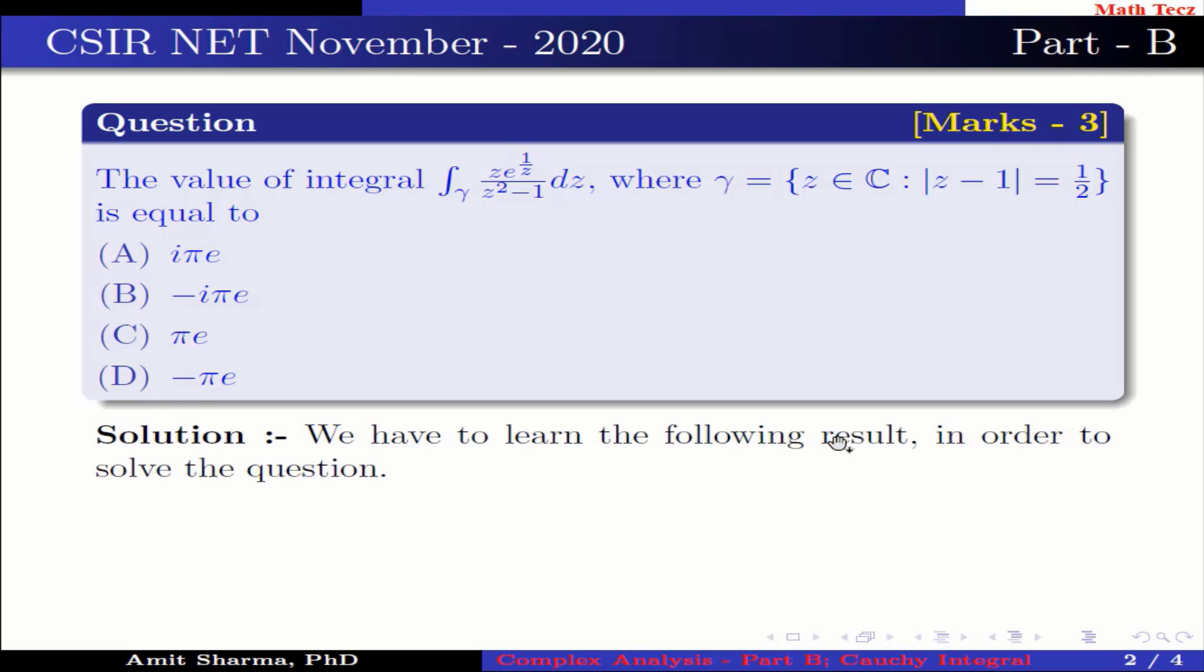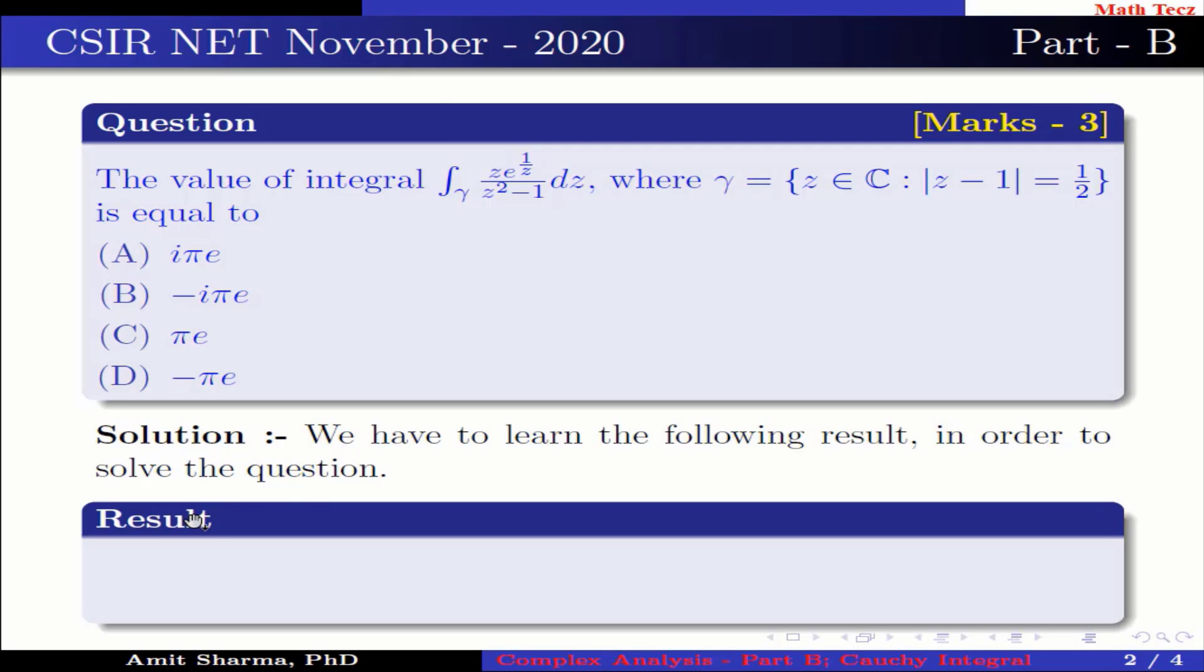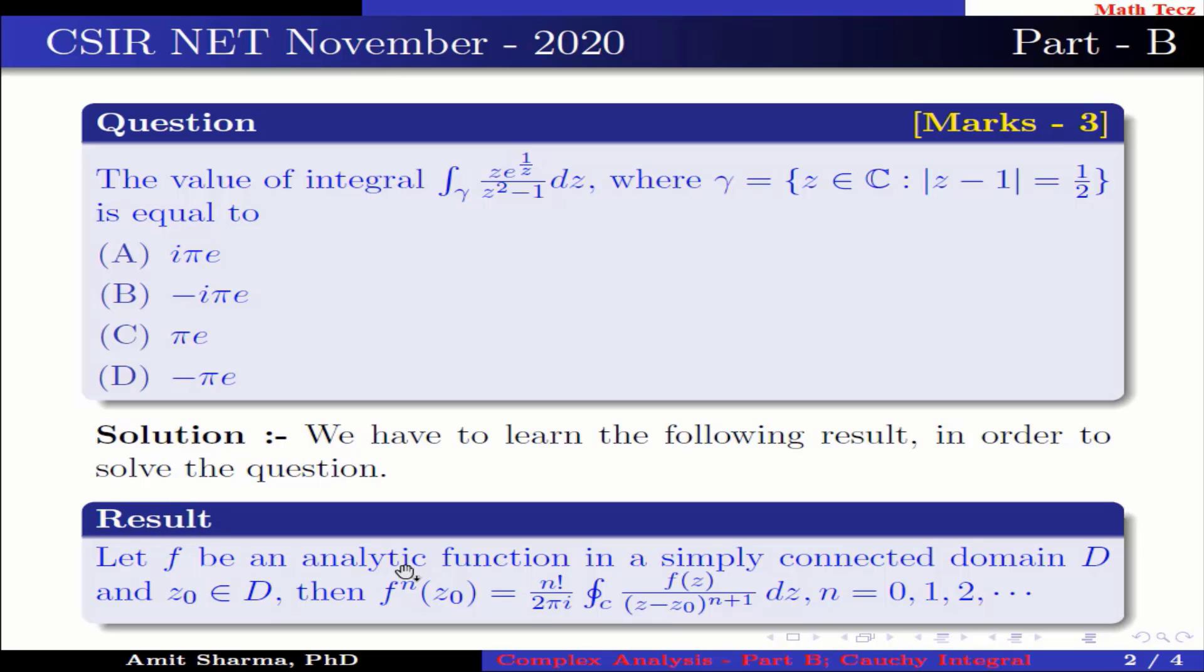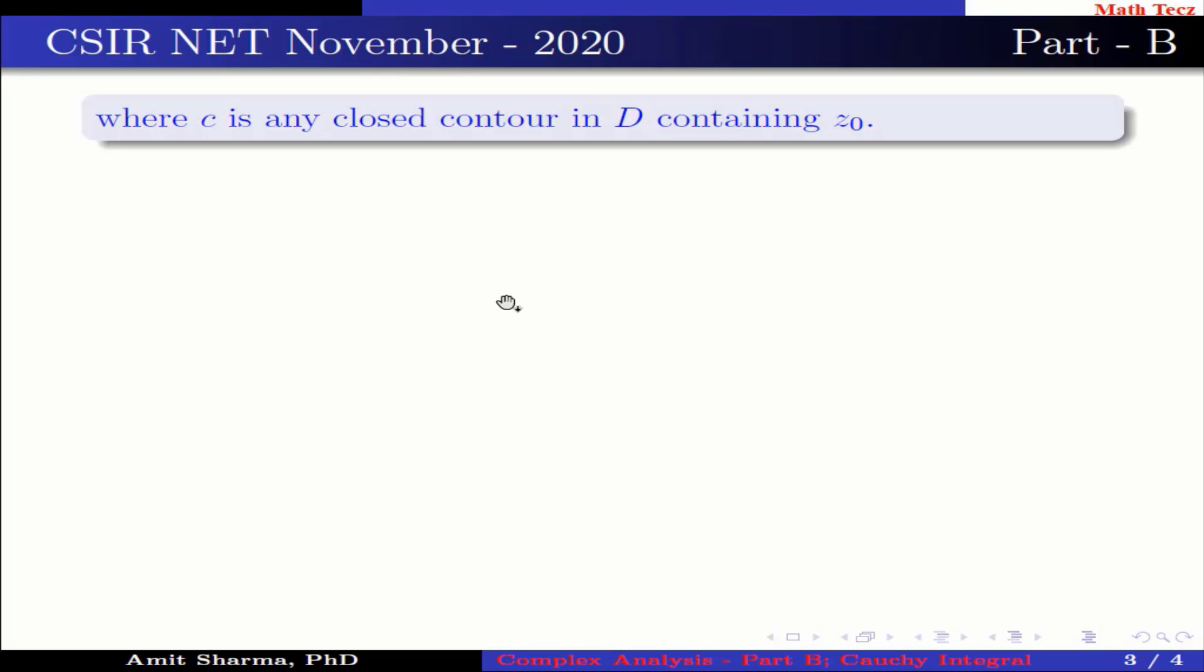We have to learn the following result in order to solve the question. Result: Let f be an analytic function in a simply connected domain D and z0 belongs to D, then f^n(z0) equal to factorial n divided by 2 pi iota, integration over c, f(z) divided by (z minus z0) to the power n plus 1 dz, n varies from 0, 1, 2 and so on, where c is any closed contour in D containing z0.